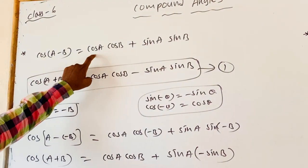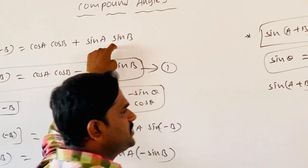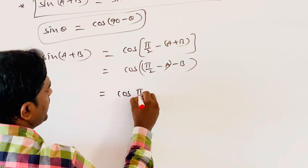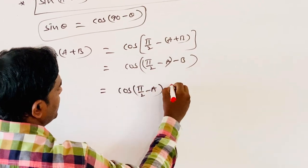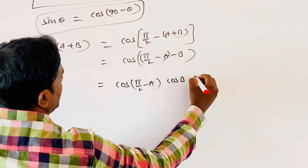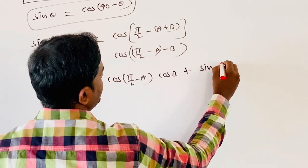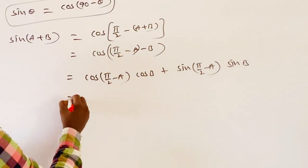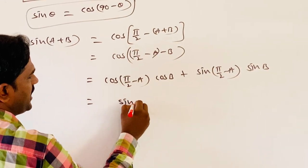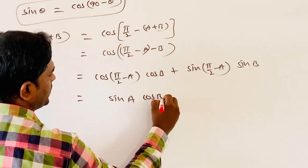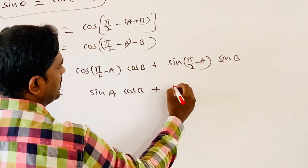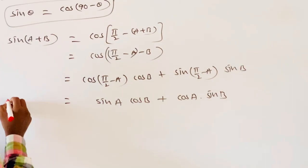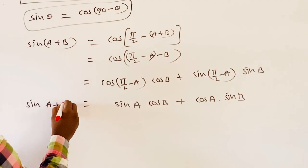The cos of A minus B formula is cos A cos B plus sin A sin B. So here A means pi by 2 minus A, and B means B. So cos A means cos(pi by 2 minus A), and applying cos(90 minus theta) equals sin theta gives sin A cos B, plus sin(90 minus theta) equals cos theta gives cos A sin B. So this is the formula for sin of A plus B.